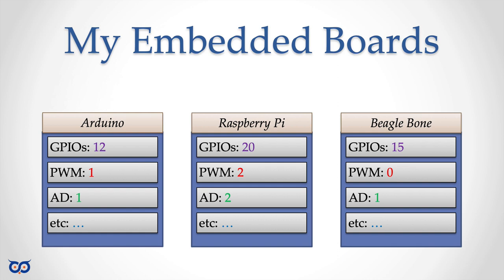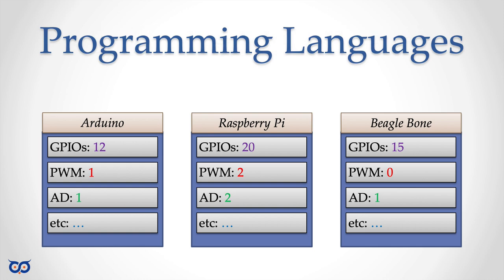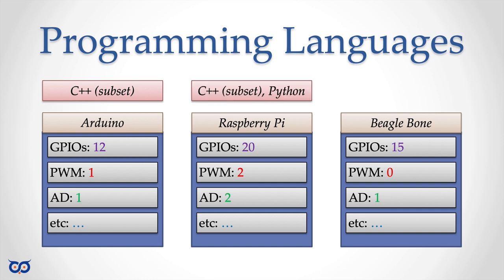Before we talk about installing gobot, we need to talk about something gobot uses and relies on — firmata. The reason gobot requires firmata is that when we write code in Go for an embedded board, it cannot run directly on the board. When programming these different boards there are a number of languages available.